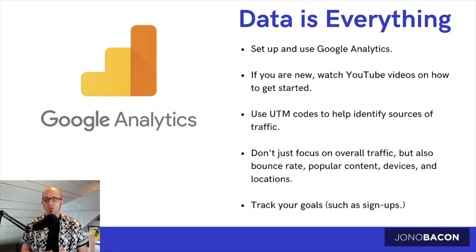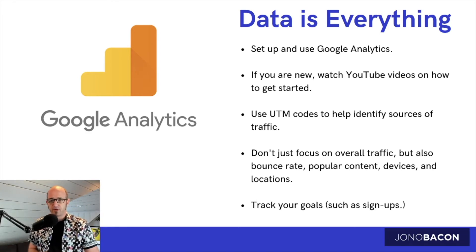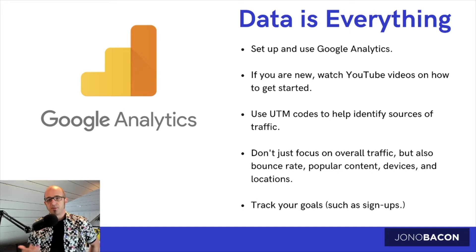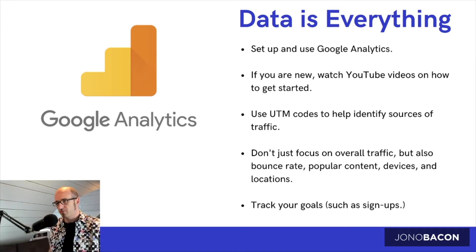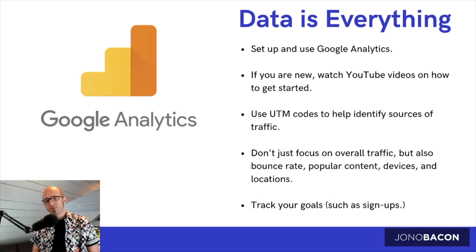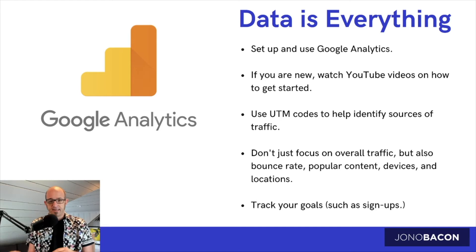The other thing you should know about are what's called UTM codes. When you put a link out there into the world, Google Analytics can tell you a little bit about where people are coming from, but UTM codes allow you to add an extra level of information. For example, imagine you're going to coordinate a webinar and you're going to do a bunch of promotion about it. You put a blog post out there about the webinar and you probably want to get a sense of where people are coming from — whether from social media, paid advertising, another blog post, or a link at the bottom of your website. With UTM codes you can essentially add information at the end of that link that will tell Google Analytics more about where they came from.